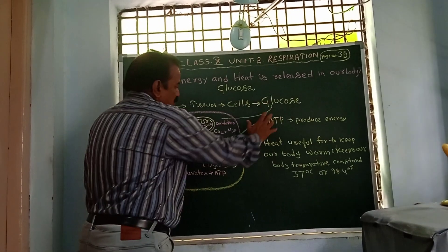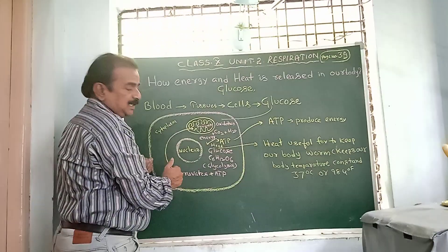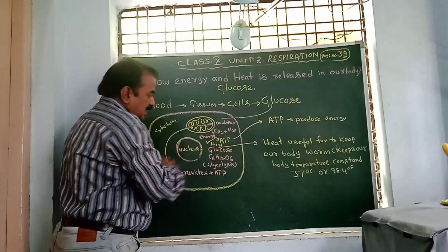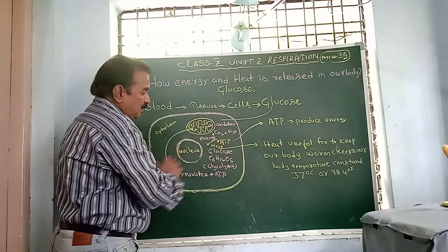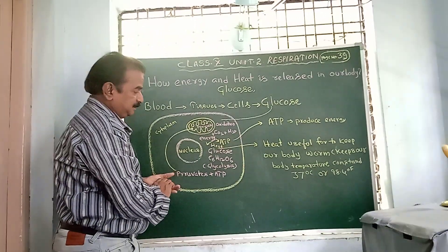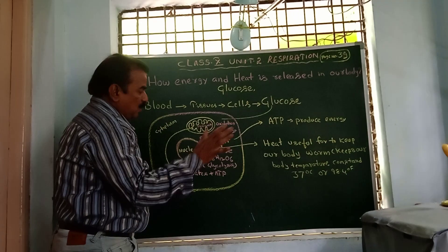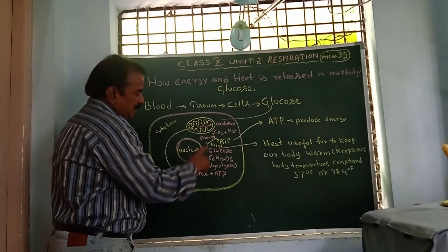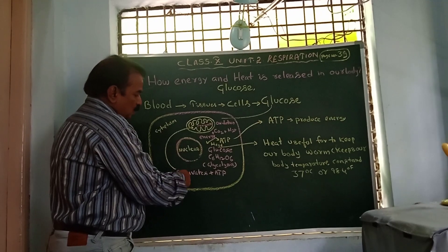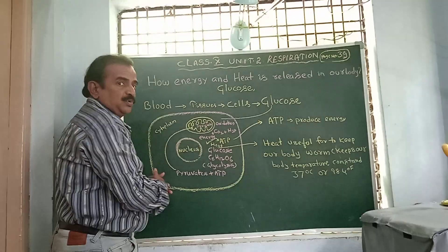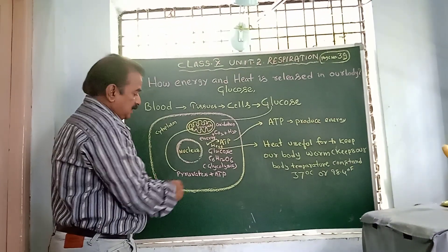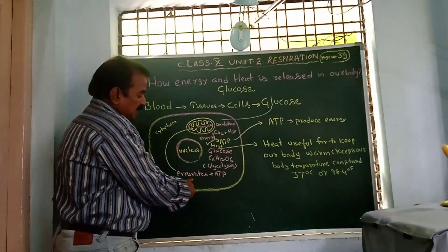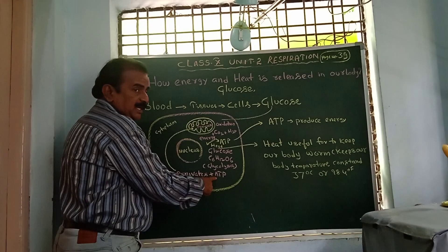When glucose molecules enter the cell, glycolysis is the first step. There is no need for oxygen in this step. Breakdown of the glucose molecule takes place and it finally breaks into two pyruvate molecules, and a few ATP molecules are produced. Each pyruvate consists of 3 carbons.